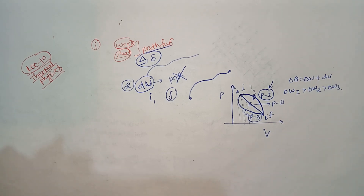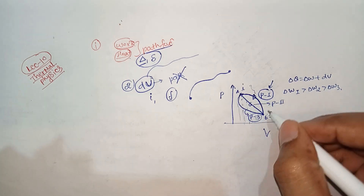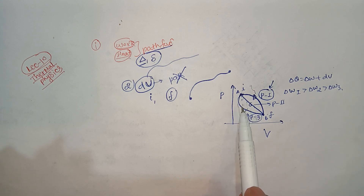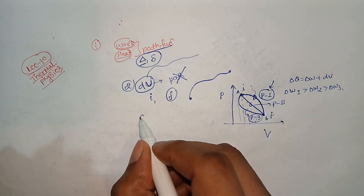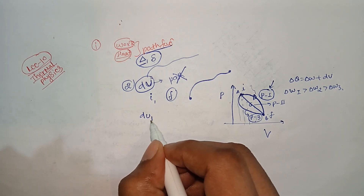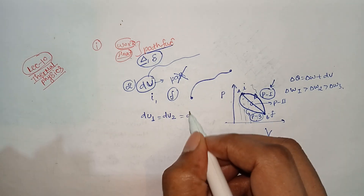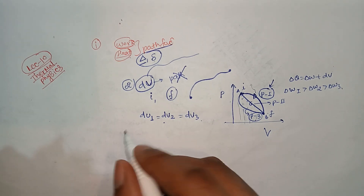Now listen carefully — internal energy depends on the initial and final state, not on the path. So whether you consider process one, two, or three, the initial and final positions are the same. Therefore, the change in internal energy for process 1 equals that for process 2, equals that for process 3.